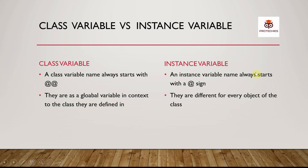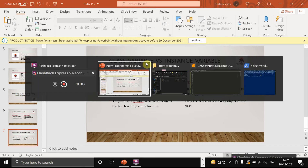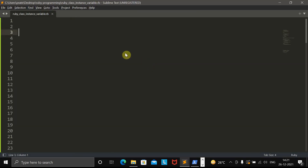And what are instance variables? They are different for every object of the class. So you can access an instance variable inside a particular class anywhere, but the instance variable will always be different for a particular object. Let's understand this with a practical example.